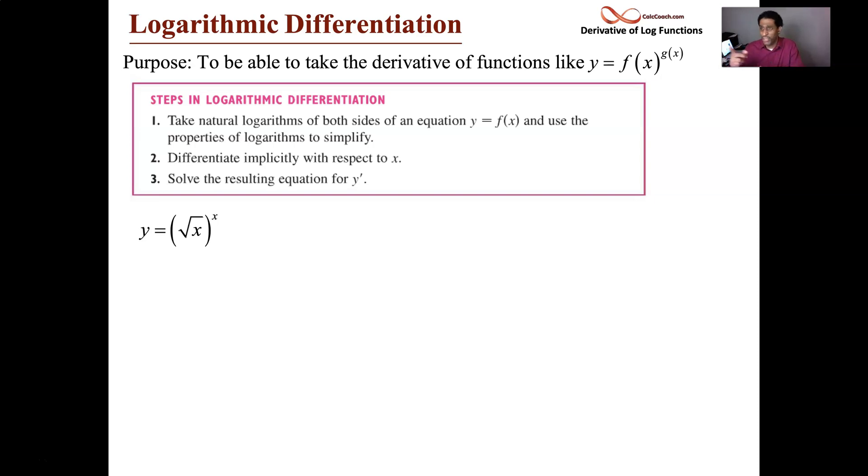If we have a number raised to a number, it's a constant, so its derivative is 0. And now we have a function raised to a function. And we're learning how to take this derivative now by starting off with taking the natural log of both sides.